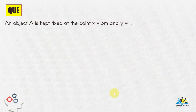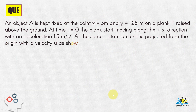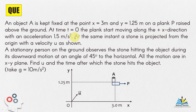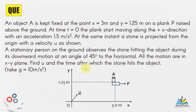Here is the question. An object A is kept fixed at a point x = 3 m and y = 1.25 m on the plank P raised above the ground. At time t = 0, the plank starts moving along the positive x-direction with an acceleration of 1.5 m/s². At the same instant, a stone is projected from the origin with a velocity u. A stationary person on the ground observes the stone hitting the object during its downward motion at an angle of 45 degrees to the horizontal. All motions are in the xy plane. Find u and the time after which the stone hits the object. Take g = 10 m/s².